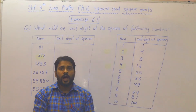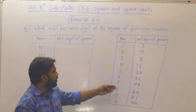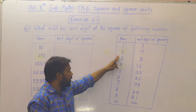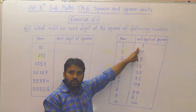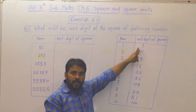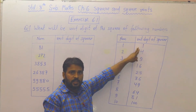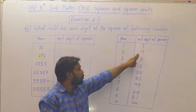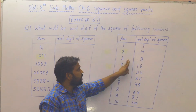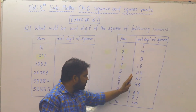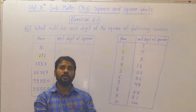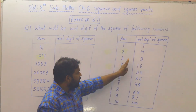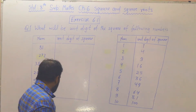तो दोस्तों, आप यहाँ देख सकते हो कि unit digit पे 1 है तो उसका square करने के बाद unit digit 1 आएगा. 2 है तो 4, 3 है तो 9. इस तरह से आप इसको देख सकते हो. अब इसी table से हम compare करेंगे.